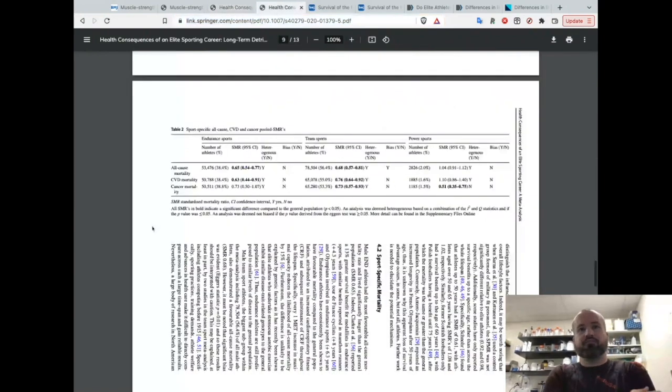We can see in this figure in this paper, look at endurance sports, team sports and power sports. All cause mortality for endurance sports is 0.65, that's a 35% reduction at any given age of risk of dying. So you're going to live longer. 0.68 for team sports, about 32% reduction. But power sports, 1.04, a 4% increase in risk of death at any given age. Cardiovascular mortality is a 10% increase in cardiovascular mortality, whereas for endurance sports you actually get a 37% reduction. You do see a decrease in cancer risk, cancer mortality, but an increase in cardiovascular mortality.